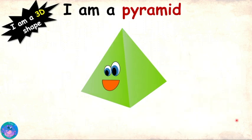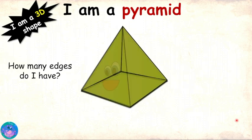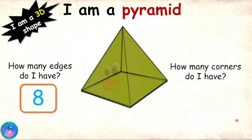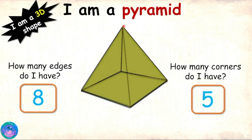And now tell me, how many edges do I have? Let me count: 1, 2, 3, 4, 5, 6, 7, 8 — 8 edges. Correct. And how many corners do I have? 1, 2, 3, 4, 5 corners. And I can see that the 4 triangles are meeting to form the corner on the top. That is right, I have 5 corners.